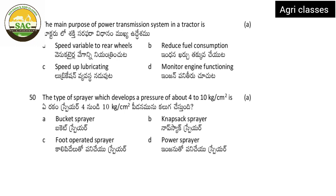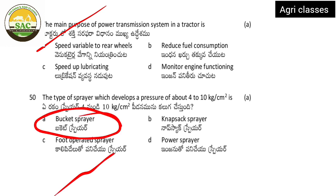Next: the main purpose of the power transmission system — options are speed variable to rear wheels, reduce fuel consumption, lubrication, or monitor engine functioning. The correct answer is speed variable to rear wheels. Next: the type of sprayer which develops a pressure of about 4-10 kg per cm² — options are pedal operator, foot operator, knapsack, bucket, and power sprayer. The correct answer is bucket sprayer. Orchard sprayers use high pressure; knapsack sprayers are used by farmers normally.